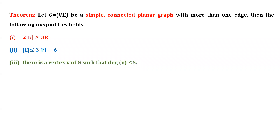If any graph satisfies any one, two, or all three of these conditions, you can't say that the graph is planar — such a graph can be non-planar also. If any condition is not satisfied, then the graph is non-planar. But if a graph does satisfy these conditions, you cannot confirm it is planar, because these results are one-sided: if a graph is planar the results will be true, but if the results are true it is not necessary that the graph is planar.